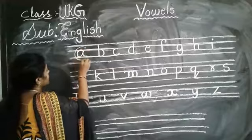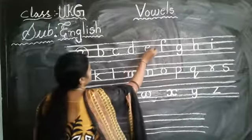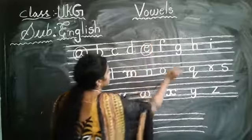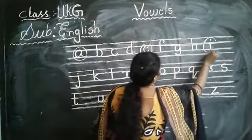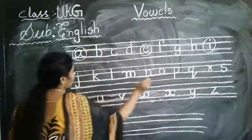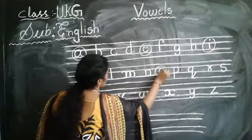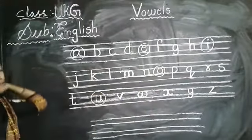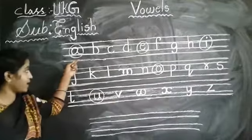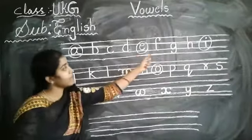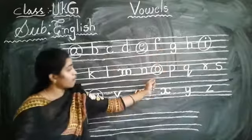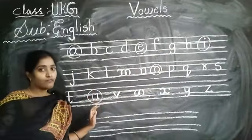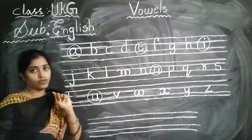A, E, I, O, U. So how many do we have? Five. A, E, I, O, U. These are vowels. We have five vowels.